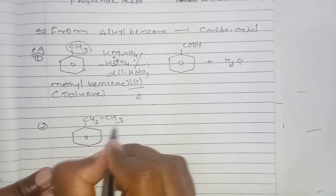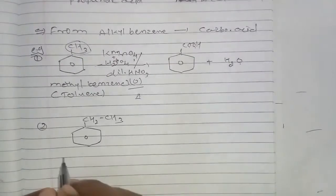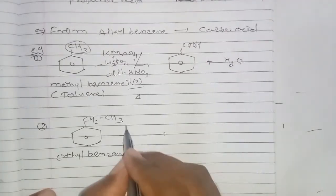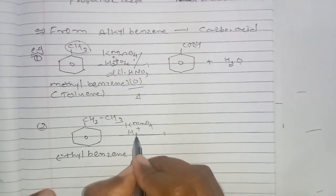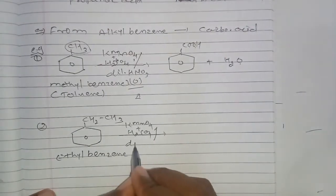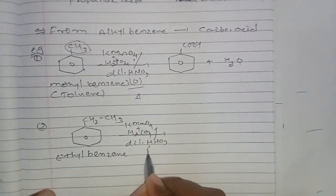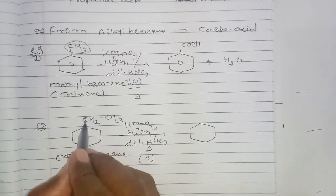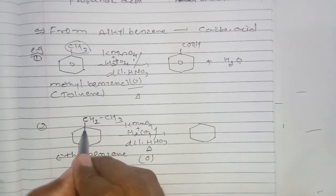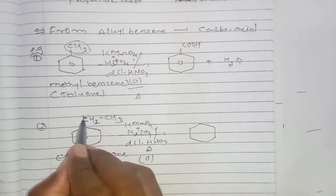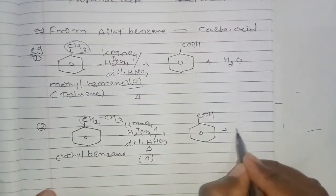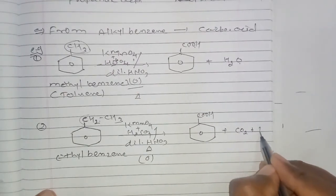Number two: CH2CH3 (ethyl benzene) is oxidized with potassium permanganate in acidic medium H2SO4 or dilute nitric acid with heating. The oxidation is carried out and the carbon bonded to the benzene ring is converted to the COOH group. Carbon dioxide and water molecules are also released as byproducts.